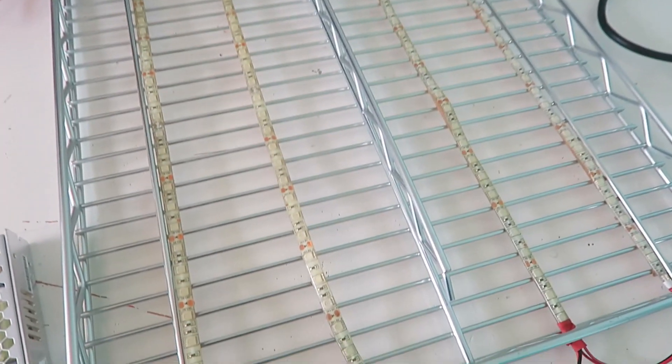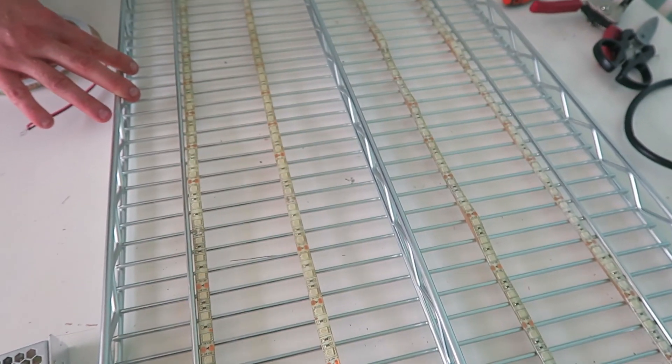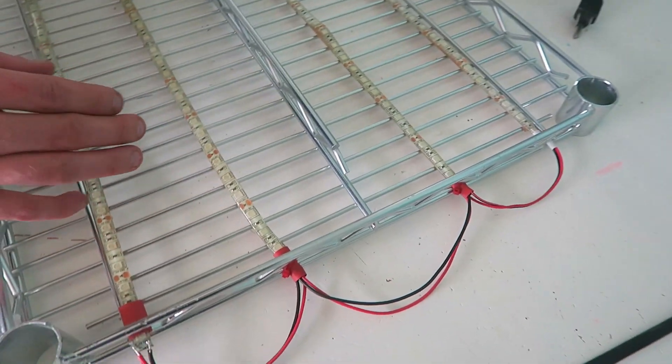So this is my grow light that I'm building out of a Costco shelf and LED strips. So this is how I connected it.